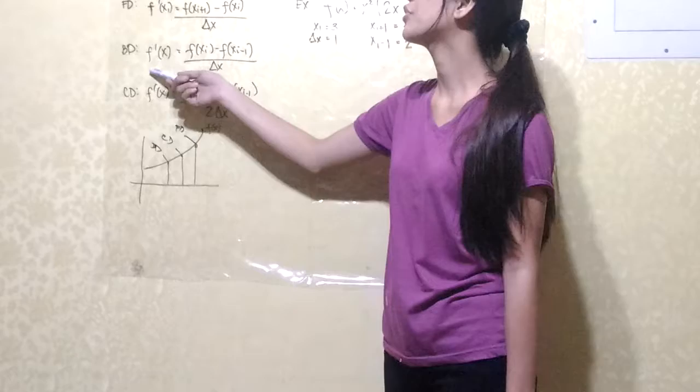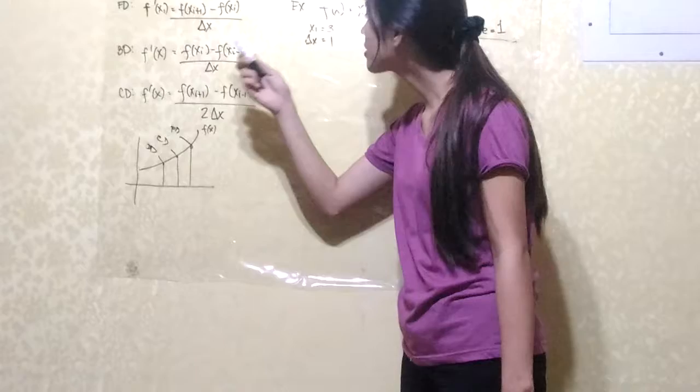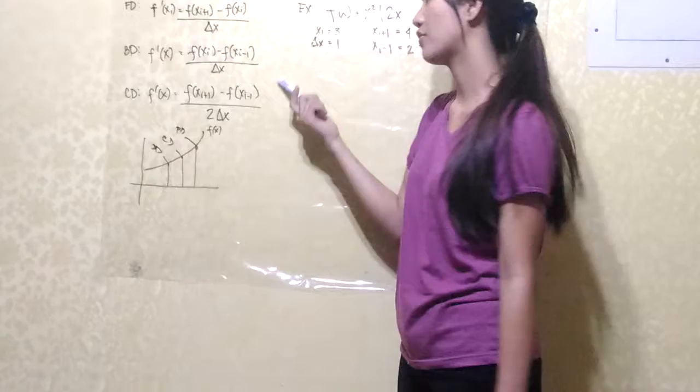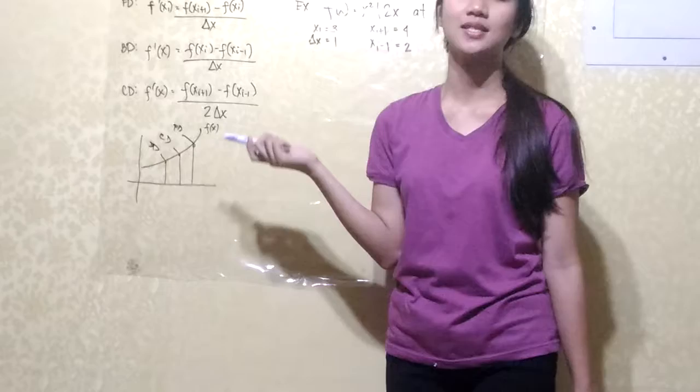For the backward difference, that would be the point of interest minus the point of interest minus our step size, all over the change of x — our slope again. And for the central difference, that would be the average of the forward difference and the backward difference, which is the point of interest plus the step size minus the point of interest minus the step size, all over twice the change of x.